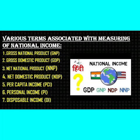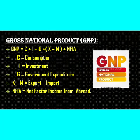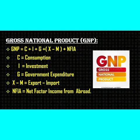Gross National Product is the total value of goods and services produced and income received in a year by domestic residents of a country. GNP can be calculated by adding C (Consumption), I (Investment), G (Government expenditure), the difference of export and import value, with the net factor income from abroad.